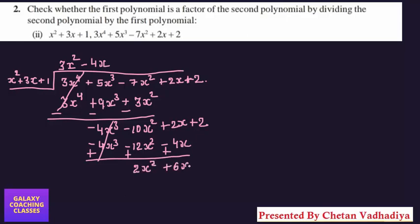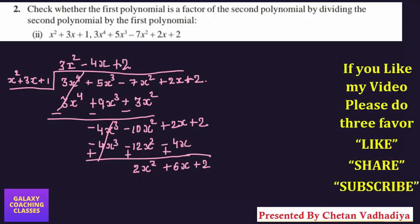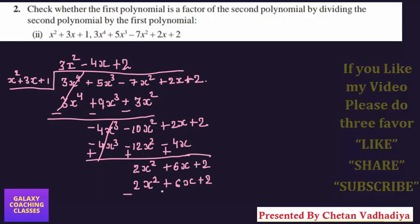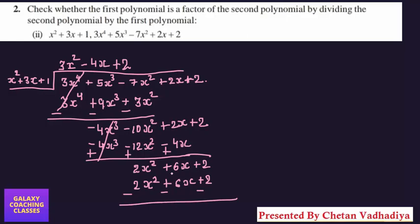Next, we multiply 2 by x² to get 2x², 2 by 3x to get 6x, and 2 by 1 to get 2. After changing signs, all three terms cancel and the remainder is 0. Therefore, the first polynomial x²+3x+1 is a factor of the second polynomial. Yes, it is a factor.